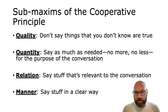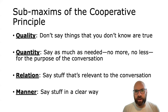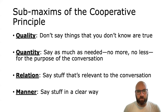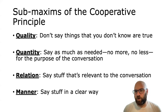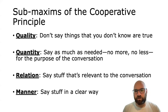These are the principles that we assume people are observing when they have a conversation. Number one, what's called the principle of quality. We don't say things that we don't know are true. Of course, in reality, people don't always do that — sometimes people lie — but the assumption we have during a conversation is normally that people are not lying.